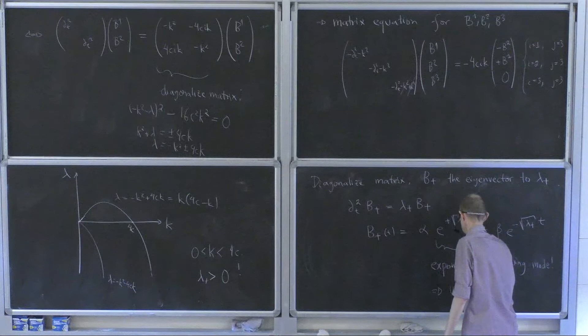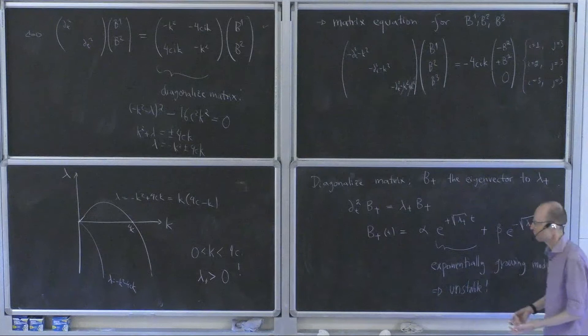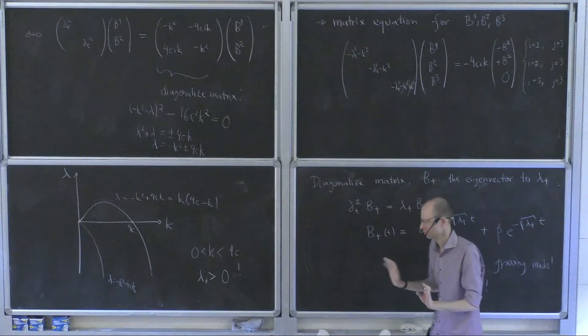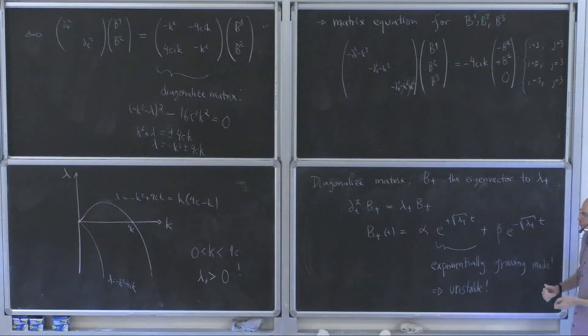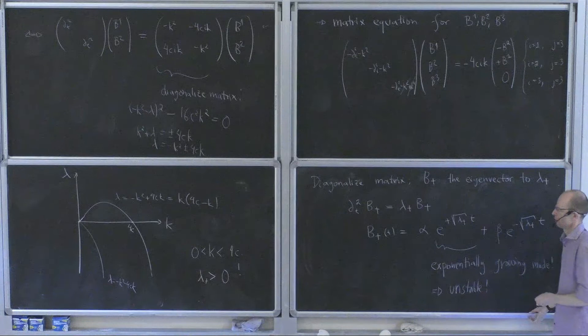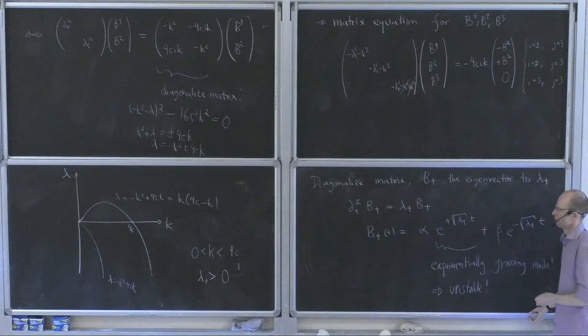An exponentially growing mode, even for only certain momenta, means the system is unstable — perturb it at those momenta and it goes crazy. Therefore the whole assumption that led us here — that we can assign independent chemical potentials — is inconsistent. In equilibrium, quark and lepton chemical potentials are not independent, and we cannot assign separate chemical potentials to left- and right-handed components of leptons. To me this is a very nice little computation.